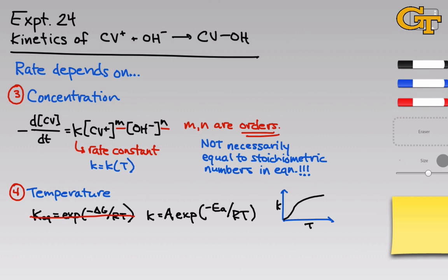To shed more light on activation energy, consider a reaction coordinate diagram with reaction progress on the x-axis and free energy on the y-axis. On the left are the reactants; on the right, in a lower valley, are the products. There's a hump — a little energy hill — that the reactants must climb before they can form products. This is true even if the products are lower in energy than the reactants. That hill is what we call E_a, or activation energy.